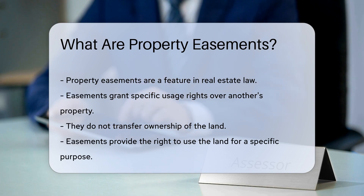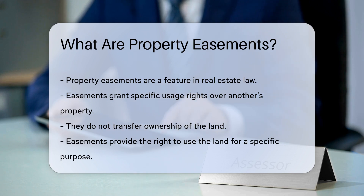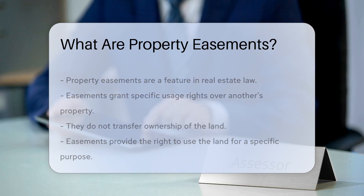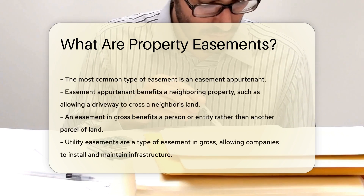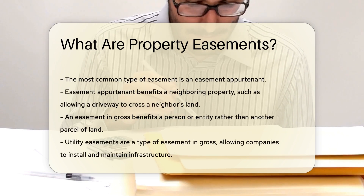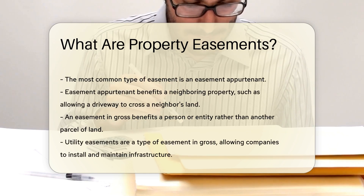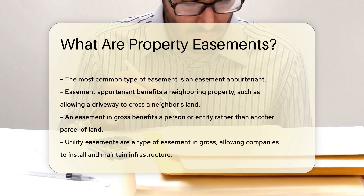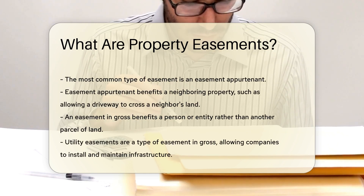There are several types of easements. The most common is an easement appurtenant. This type benefits a neighboring property — for example, it might allow a driveway to cross a neighbor's land.